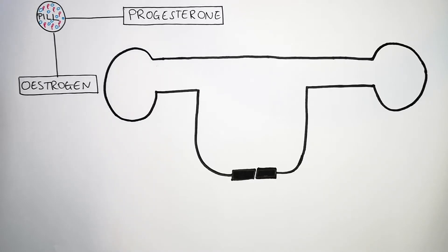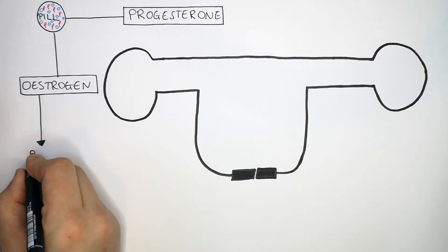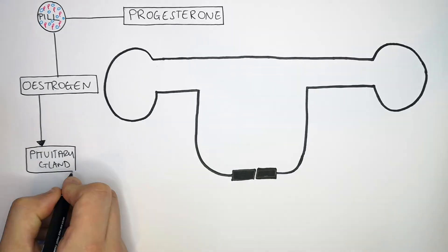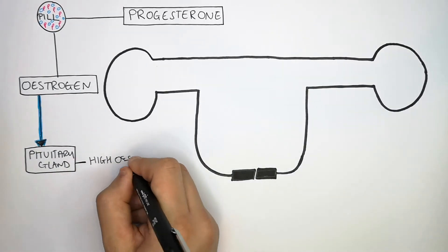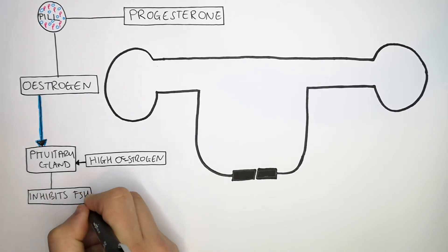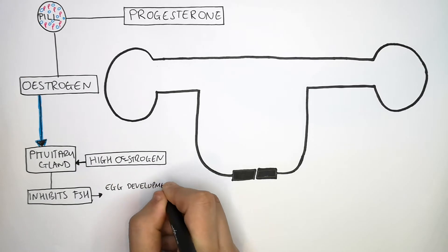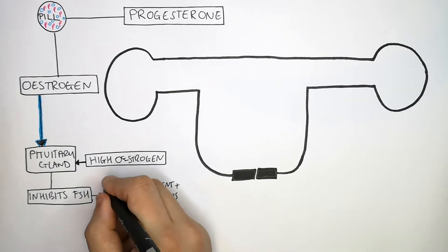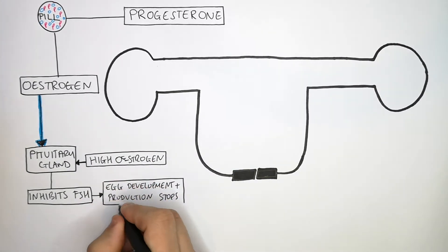The combined pill contains progesterone and oestrogen. What does the oestrogen do? The oestrogen goes to the pituitary gland and inhibits FSH prematurely. If there's no FSH being produced, that means egg development and production will stop. So there will be no egg development.